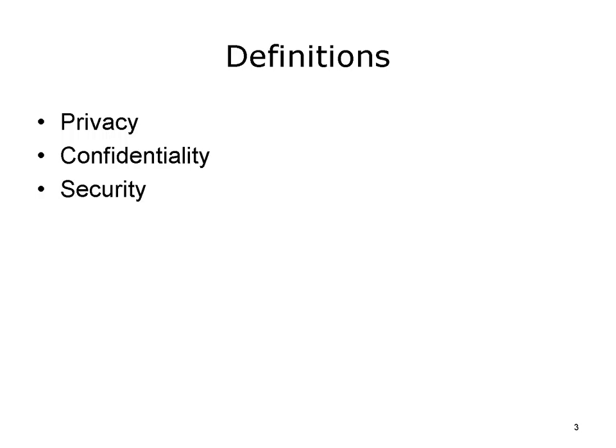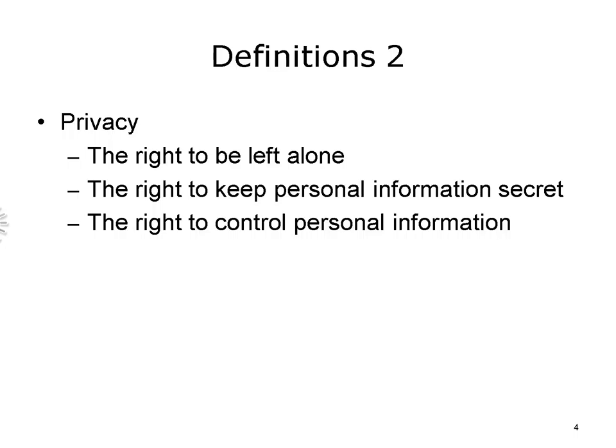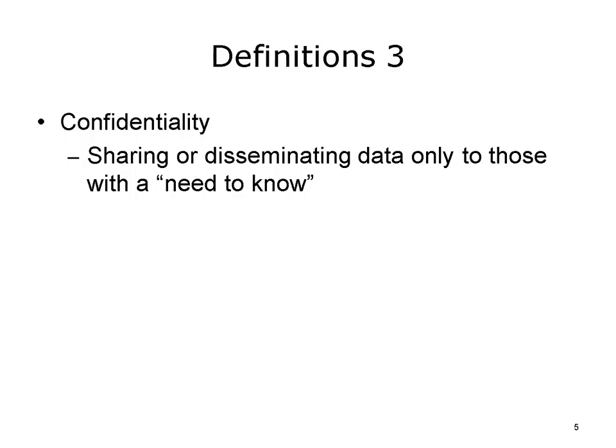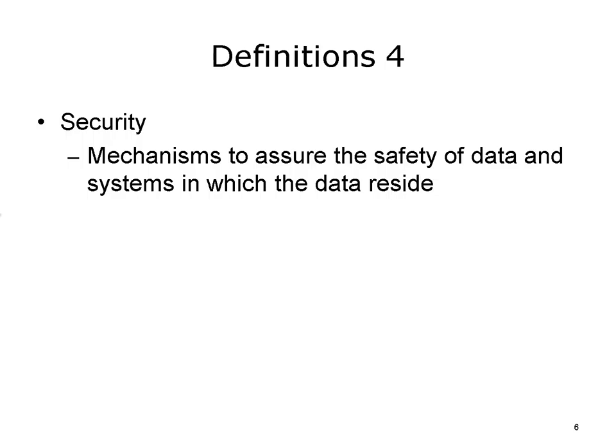Let's begin with the definitions. As with any definitions, there are often differences in how different people use the same words. I'm going to give you definitions that make clear distinctions between the concepts of privacy, confidentiality, and security. But you will find that others sometimes have slight variations on these definitions, or use the words interchangeably. What is important is that we attend to the concepts behind the terms. Privacy refers to the right to be left alone and to keep personal information secret.